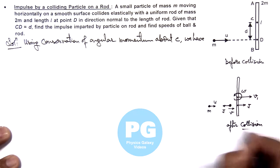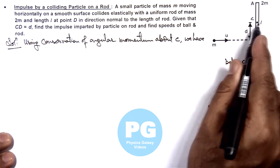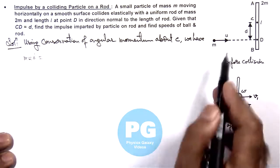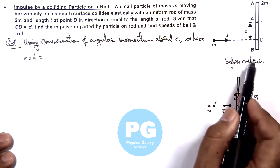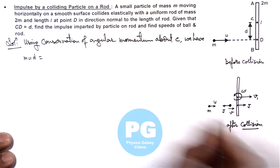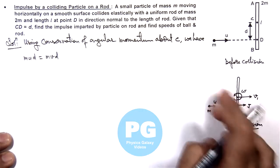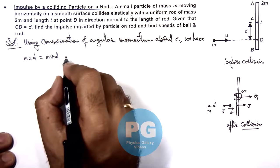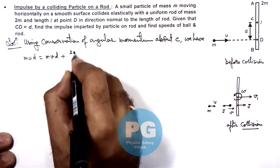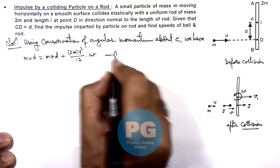After collision, conserving angular momentum for the whole system about point C, the initial angular momentum was m·u·d (only the ball, since the rod was at rest). After collision, both ball and rod have angular momentum, so we write: m·u·d = m·v·d + (2m·l²/12)·ω. This is our first equation.